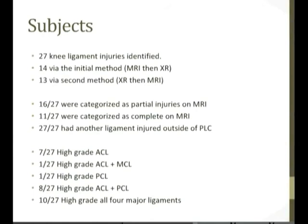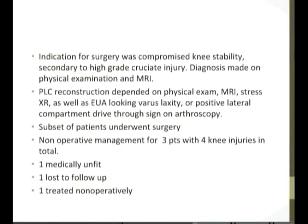Of the 27 cases: 7 had a high-grade ACL injury, 8 had high-grade ACL and PCL injuries, and 10 had high-grade injuries in all four major ligaments. Indications for surgery were based on compromised knee stability secondary to high-grade cruciate injury, diagnosed via physical examination and MRI. Criteria for posterolateral corner reconstruction depended on physical examination, MRI, stress x-ray, and examination under anaesthetic looking for varus laxity, or a positive lateral compartment drive-through sign on arthroscopy.